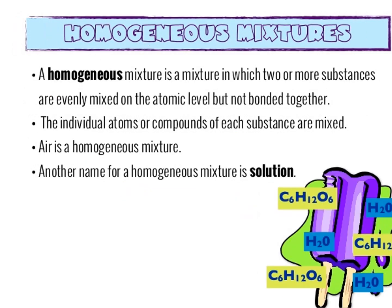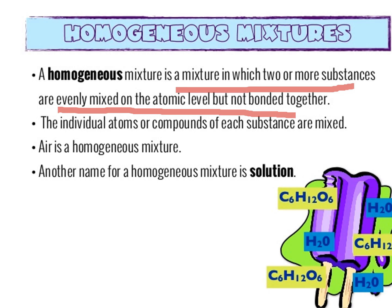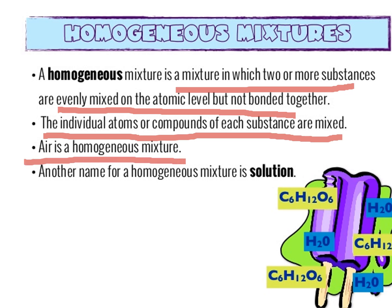Next, a homogeneous mixture is a mixture in which two or more substances are evenly mixed at the atomic level but not bonded together. The individual atoms or compounds of each substance are mixed. Air is a homogeneous mixture. Another name for a homogeneous mixture is solution.